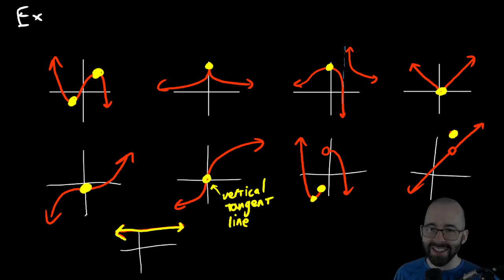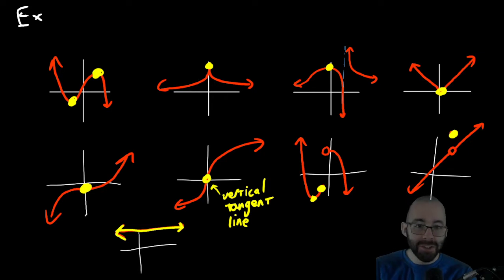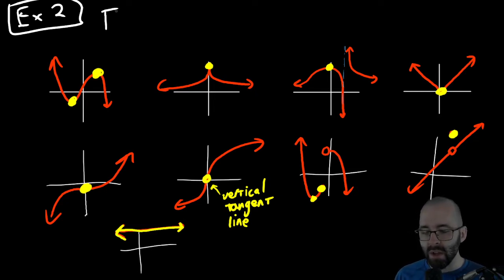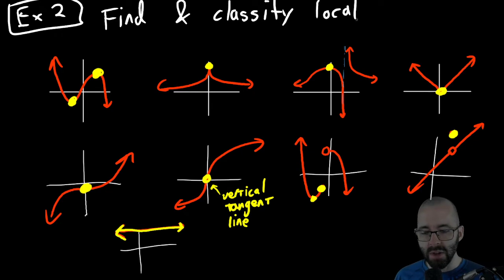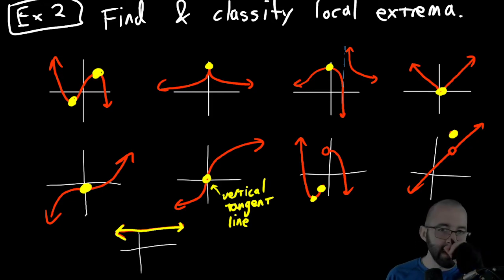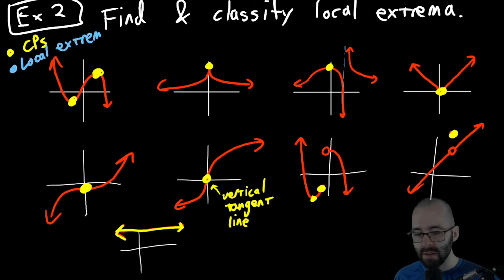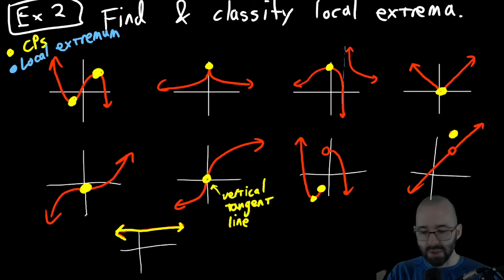You can go back in your notes and leave off the example two part if you want. We're going to be finding and classifying the local extrema — the plural of local extremum is local extrema. You can make a note: critical points are in yellow, and local extrema in blue. Let's think again about what local extrema are.